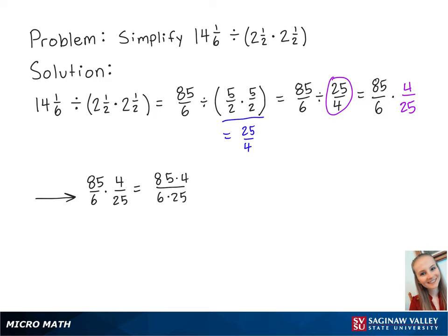To make this easier, we want to find common factors of the numbers in the numerator and in the denominator. 5 is a common factor of 85 and 25, and 2 is a common factor of 4 and 6. So in the numerator, we will have 5 times 17 times 2 times 2, which is all over 2 times 3 times 5 times 5.